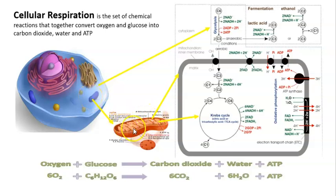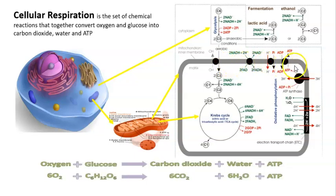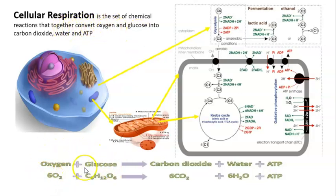Inside the mitochondria there is the matrix in the middle, where the Krebs cycle (also called the citric acid cycle or tricarboxylic acid cycle) will happen. The next step is oxidative phosphorylation, which happens in the mitochondrial inner membrane — an aerobic process. Cellular respiration converts oxygen and glucose into carbon dioxide, water, and ATP.